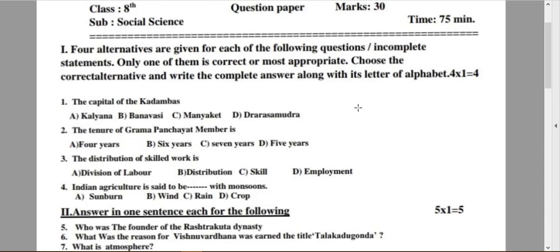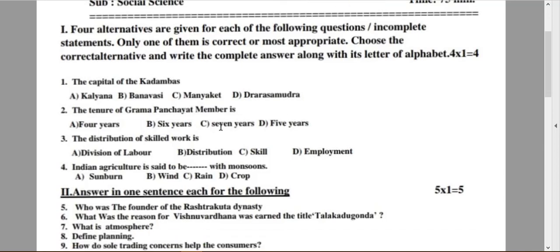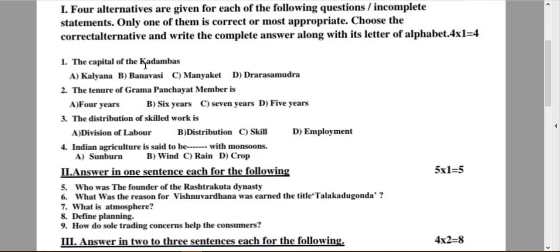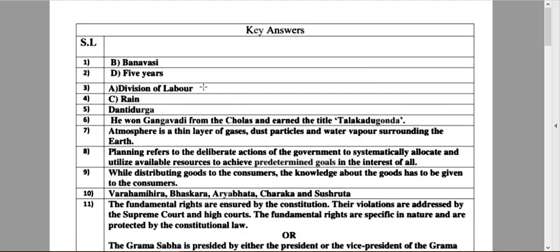What is the question and what are the answers for those questions? Here is the first question. Option A: Kalyana. Option B: Banawasi. Option C: Maniaket. And option D: Dwarasamudra. And the answer is Banawasi. Banawasi is the right answer.